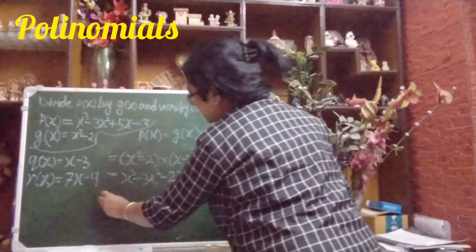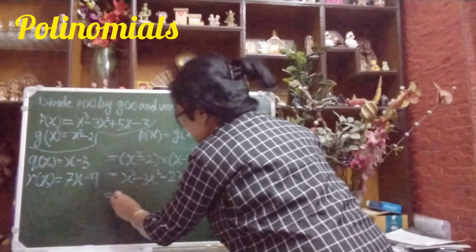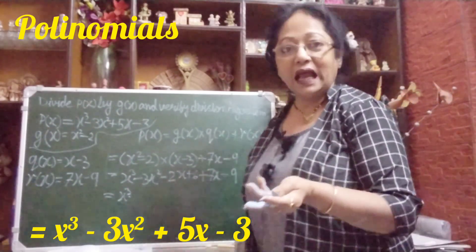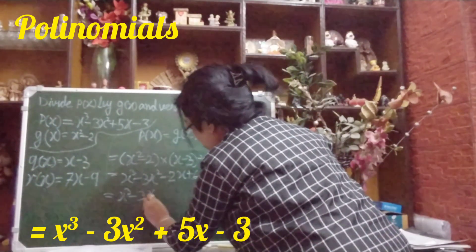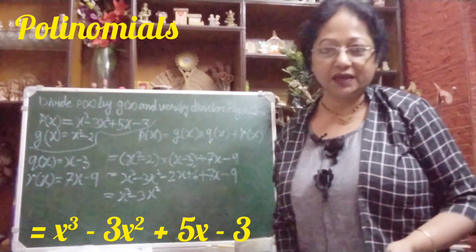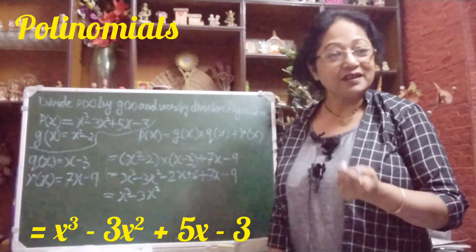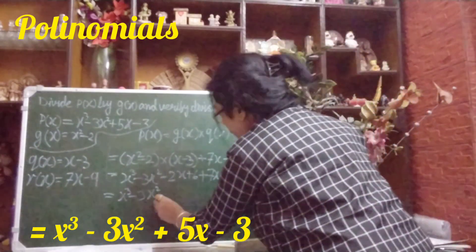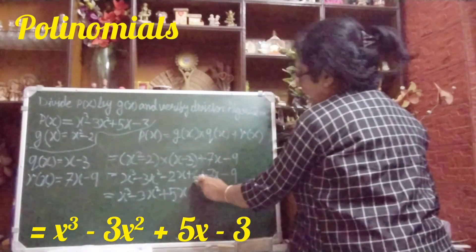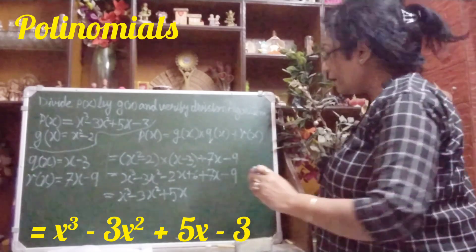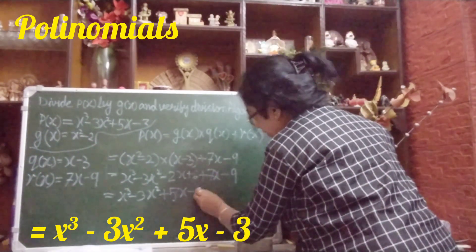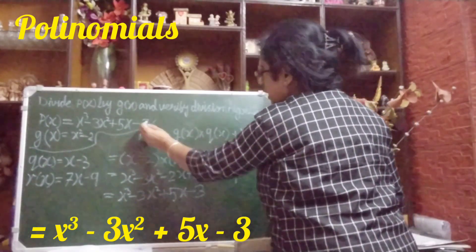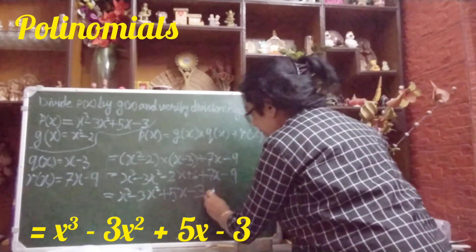Now combining like terms: x³ stays as x³. −3x² stays as −3x². For the x terms: −2x + 7x = +5x. For the constants: +6 − 9 = −3. So the result is x³ − 3x² + 5x − 3, which is exactly our p(x). Hence verified.